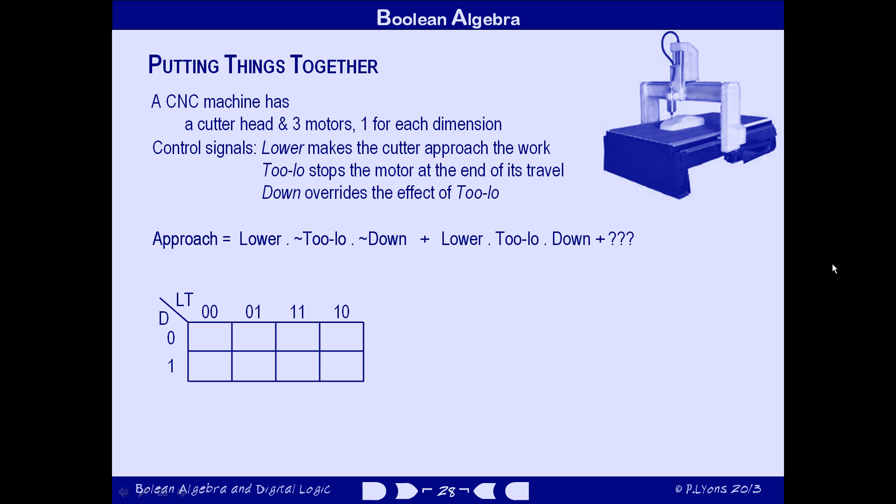We'll draw it up in Karnaugh map format in the hope that some minimization may be possible. We'll use L to represent the lower input. Remember, that's the input from the computer program that's controlling this device, and it's not the signal that this circuit will generate. We're calling that approach. T will be used to represent the too-low input, and D to represent the down input. So now we can work through the table cells one by one. And when we've finished, we'll know that we've considered all possible input combinations. The first cell tells us what the circuit should output if the computer doesn't want to lower the cutter head, if the cutter is not too low, and the operator does not want to override the limit switch. Clearly, we don't want the cutter to approach the workpiece.